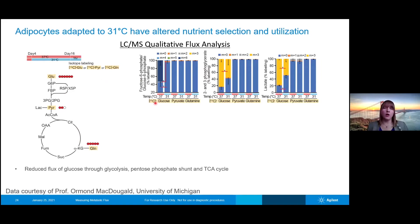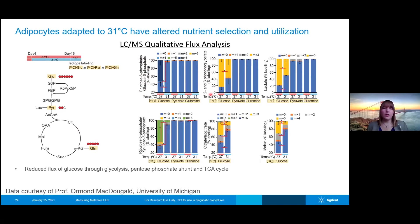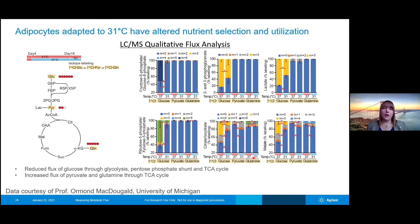Focusing on the carbon-13 labeled glucose data, we confirm this reduced flux of glucose through the glycolysis pathway. At 37 degrees, there's quite a bit of labeling that gets incorporated, but at 31 degrees this labeling is much reduced — not only for fructose-6-phosphate and glucose-6-phosphate, but also for other metabolites in that glycolytic pathway. Looking at the pentose phosphate shunt, we also see a decrease in label incorporation of glucose into ribulose and xylulose-5-phosphate. And looking at the TCA cycle — citrate, isocitrate, and malate — we again see this reduction in labeling when the cells are at 31 degrees Celsius.